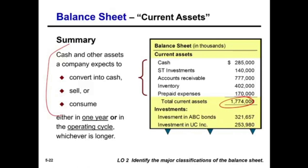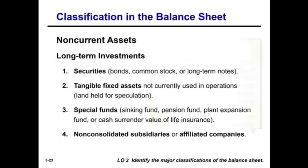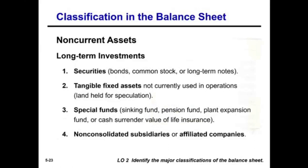Now we move from current assets to non-current assets. Non-current assets generally include: long-term securities, tangible fixed assets or PP&E, special funds, and non-consolidated subsidiaries or affiliate companies. We're going to look at each one of them separately. This is just an overview — eventually we'll learn the details of each one.